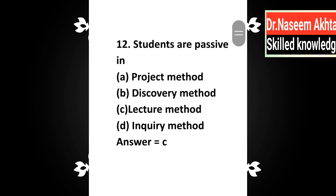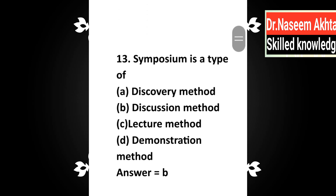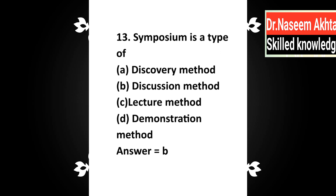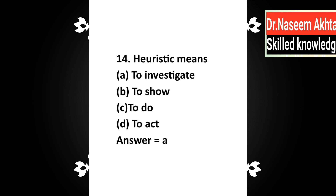Question 12: Students are passive in which method — a) project method, b) discovery method, c) lecture method, d) inquiry method? Correct answer is C: lecture method. Question 13: Symposium is a type of — a) discovery method, b) discussion method, c) lecture method, d) demonstration method. Correct answer is B: discussion method. Question 14: Heuristics means — a) to investigate, b) to show, c) to do, d) to act. Correct answer is A: to investigate.